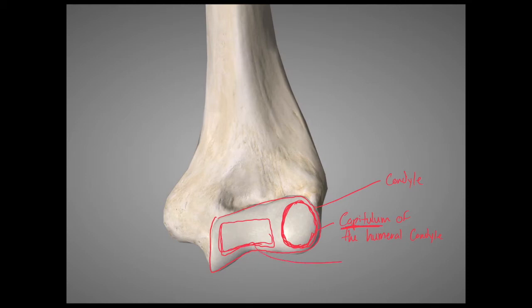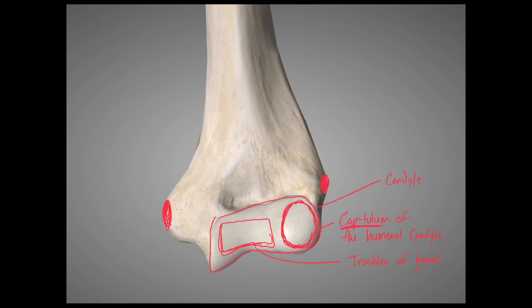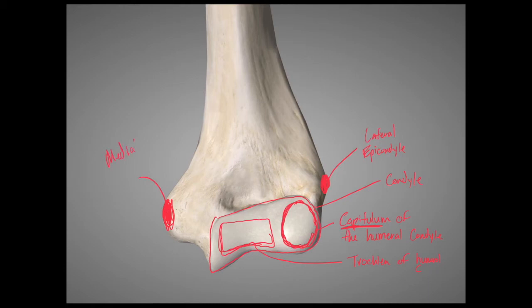The second landmark on the humeral condyle is going to be called the trochlea of the humeral condyle. Above the condyle, just proximal to it, we have two landmarks. 'Epi' means upon, so these are upon the condyle — we have the lateral epicondyle of the humerus on one side and the medial epicondyle of the humerus on the other.